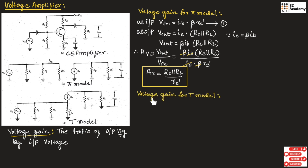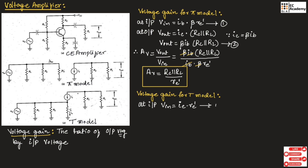Now let us find the voltage gain for the T equivalent model. Figure C shows the T equivalent model. To find the voltage gain, we need to find input voltage and output voltage, and from that derive the expression for voltage gain. At the input side, input voltage will be equal to I_E into R_E dash. So we can write V_in equals I_E into R_E dash. Let us take this as equation number 1.